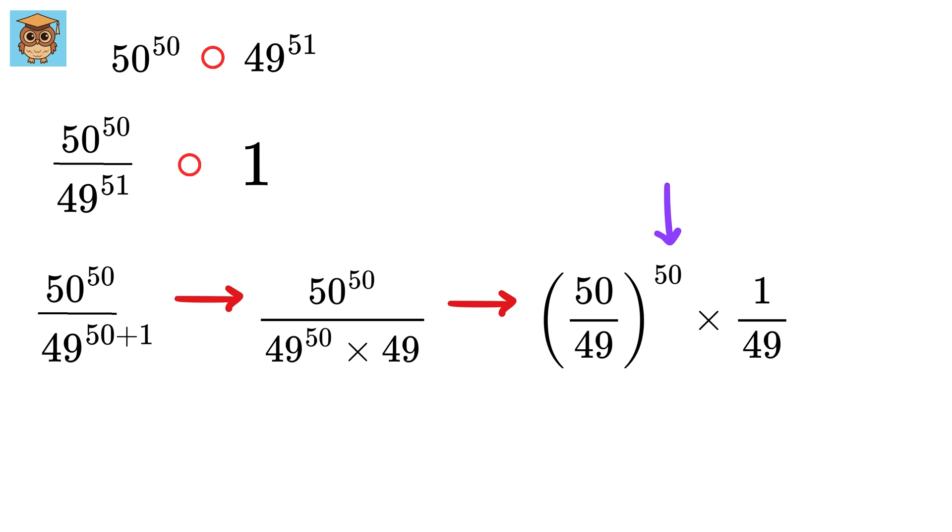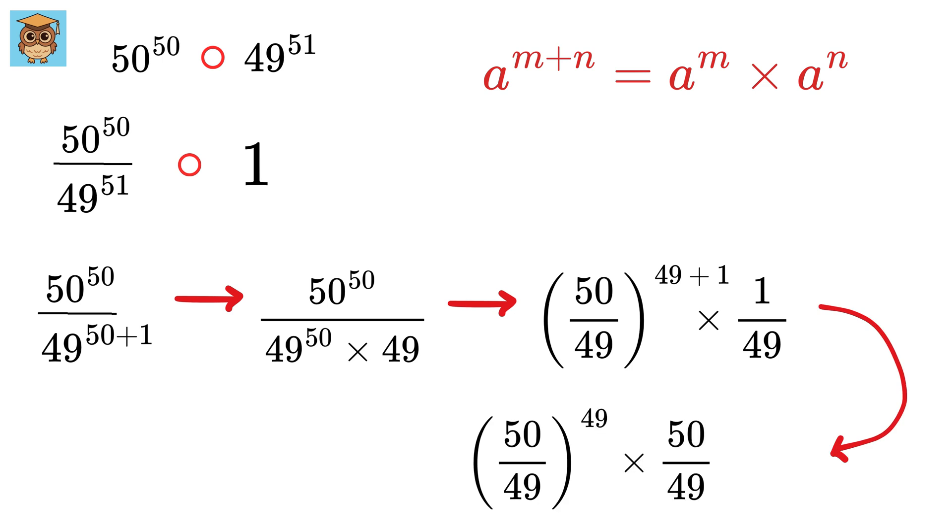Now this 50 in the power can be written as 49 plus 1. So again, using power rule, we can write it as 50 upon 49 raised to 49 times 50 upon 49, and this times 1 by 49. So it becomes 50 upon 49 square.